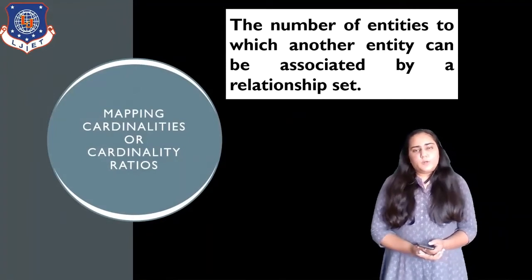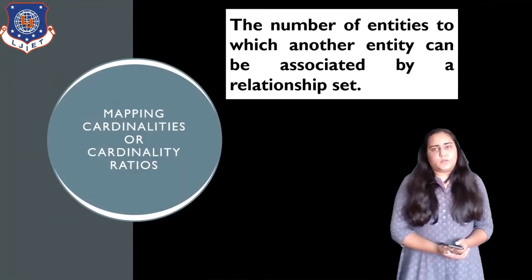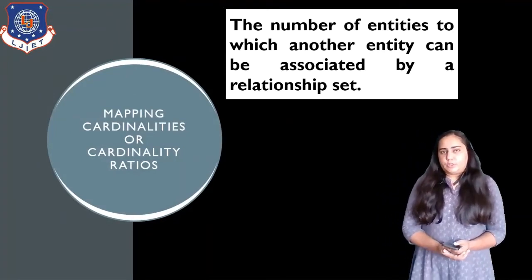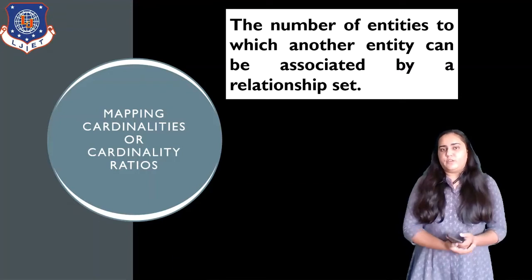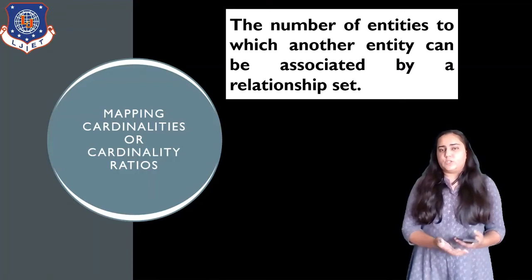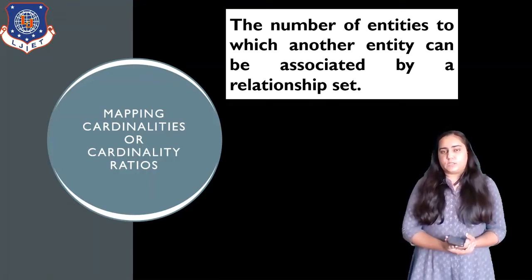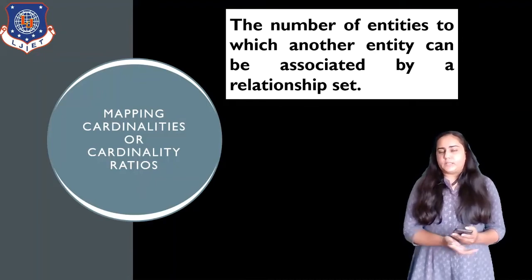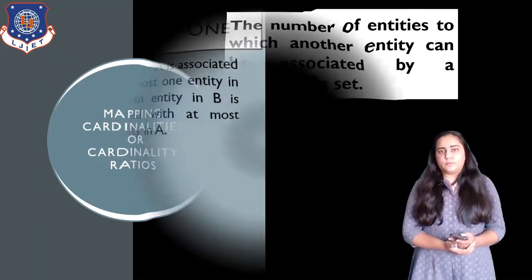So mapping cardinalities, or cardinality ratios, refers to the number of entities to which another entity can be associated by a relationship set. Let's take a look at some examples.